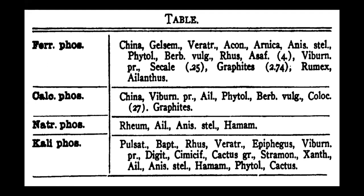Colosynth contains 27 percent Calcarea Phos, which is why their symptomatology is very close. Natrum Phosphoricum is present in Rheum, Eleanthus, Anistelata, and Hamamelis. Kali Phosphoricum is a common remedy we use, and you will find that a number of remedies carry Kali Phos — Pulsatilla is there, Baptisia is there, Rhus Tox is there.